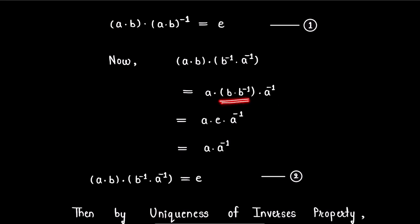Now this b·b^(-1) will be identity. So we get a·e·a^(-1). Again this can be written as a·a^(-1) which is equal to e, since a·a^(-1) will be identity.